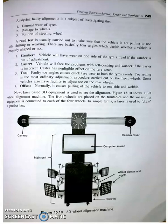Caster has a negligible effect on tire wear. The third angle is toe — a faulty toe angle causes quick tire wear on both tires. Toe setting is the most common adjustment procedure carried out on the front wheels, and some vehicles also have the facility to adjust toe on the rear wheels.